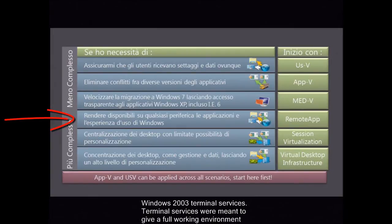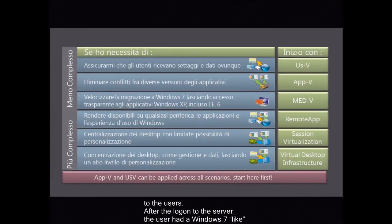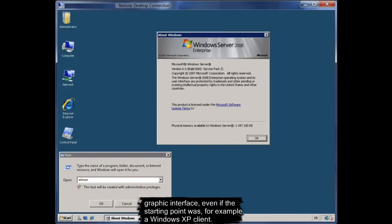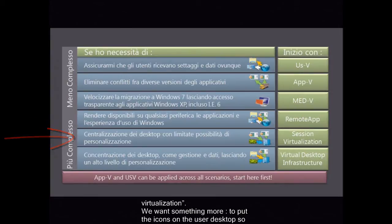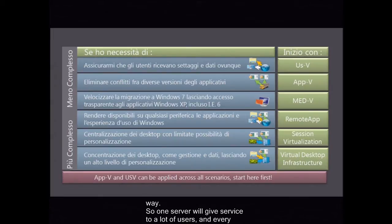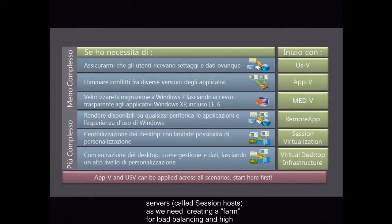Remote app is similar to the old Windows 2003 terminal services. Terminal services were meant to give a full working environment to users. After logon to the server, the user had a Windows 7-like graphic interface even if the starting point was, for example, a Windows XP client. We used a remote desktop session for what we now call session virtualization. We want something more — to put icons on the user desktop so that he's able to launch applications installed on the server in a transparent way. One server will give service to many users, and every update will be made only once on the server. We can install as many servers, called session hosts, as we need, creating a farm for load balancing and high availability.